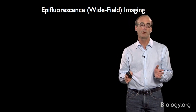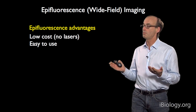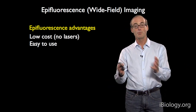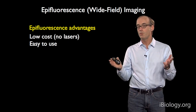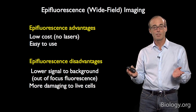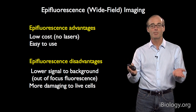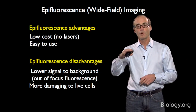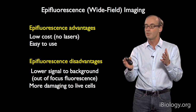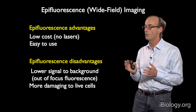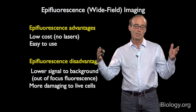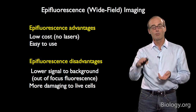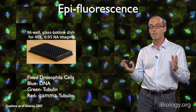The easiest type of fluorescence is epifluorescence. Its advantages are that it's the very simplest technique — low cost, no lasers needed, and very simple to use. There are some disadvantages: out-of-focus fluorescence contributes a background haze in your image, so the signal in your plane of focus may not be great. Additionally, epifluorescence penetrates through the entire specimen, meaning fluorescence excitation can damage the cell not only in the plane of focus but in out-of-focus planes as well. But in many cases, it's perfectly adequate.